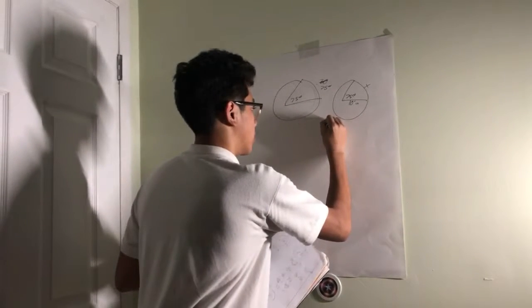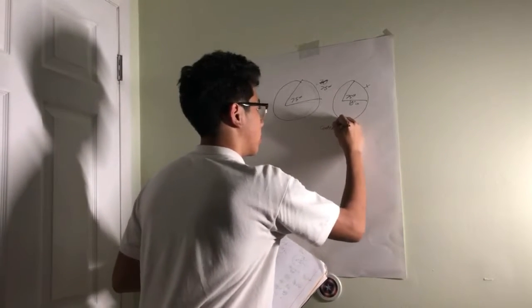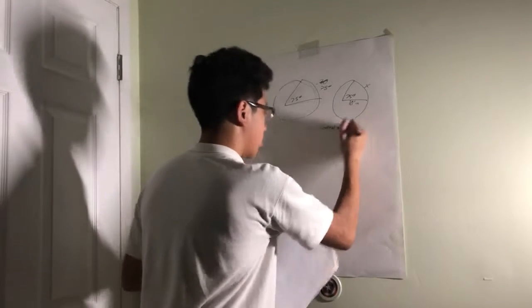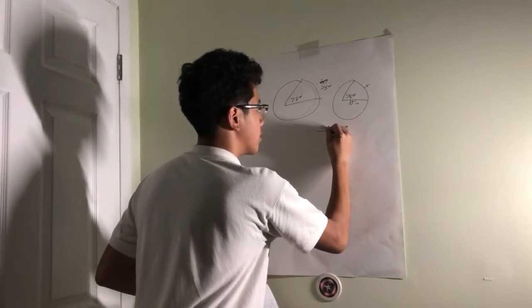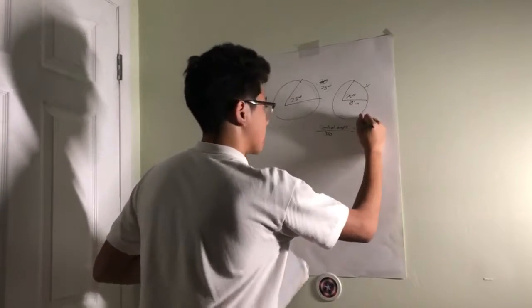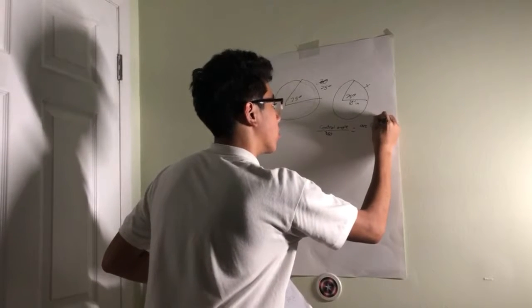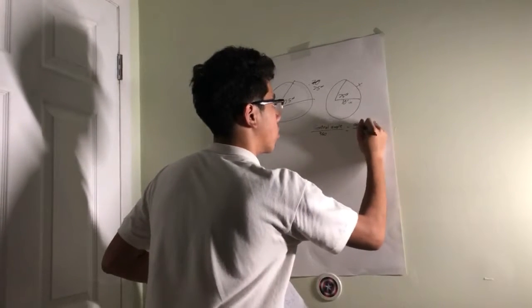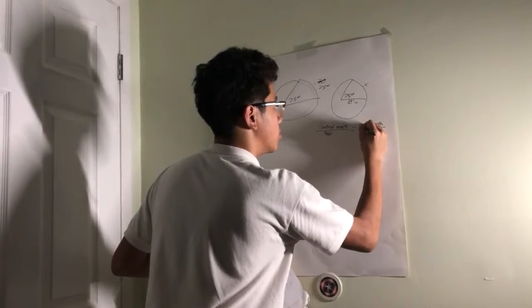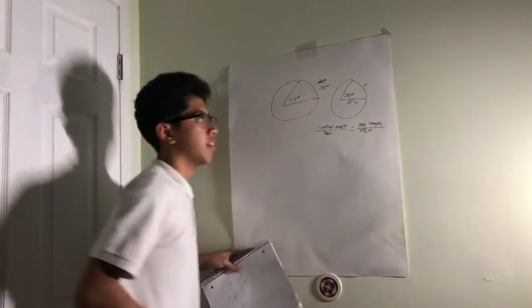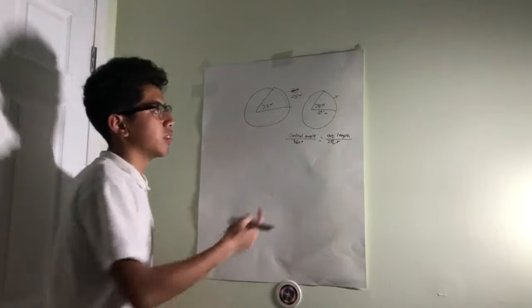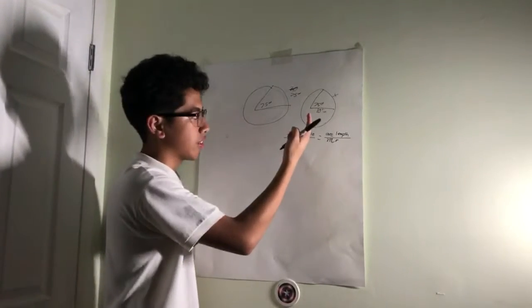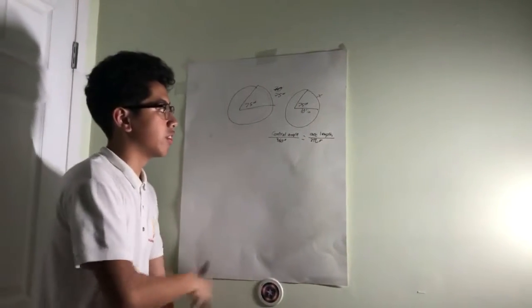So the formula to find the arc length would be central angle over 360 equals arc length over 2 pi r. So this would be the basic formula to find the arc length, given the central angle and the radius.